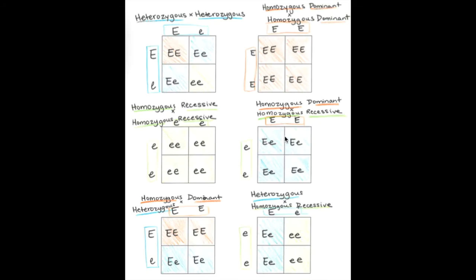Here is a reference table of all the possible Punnett square crosses between heterozygous and homozygous genes. It shows: heterozygous vs. heterozygous, homozygous dominant times itself, homozygous recessive times itself, homozygous dominant vs. homozygous recessive, homozygous dominant vs. heterozygous, and heterozygous vs. homozygous recessive. You can screenshot this, and I'll upload it to the website. You can also use the colors to count boxes and calculate your percentages.